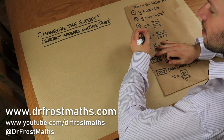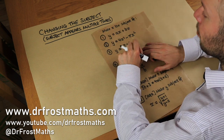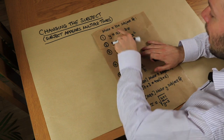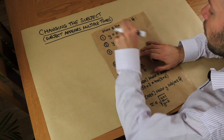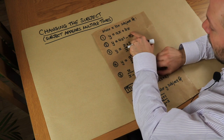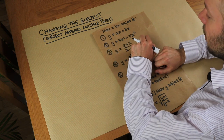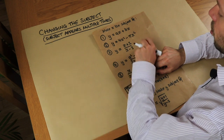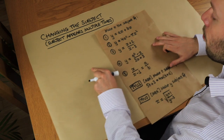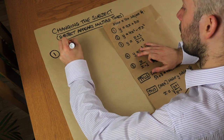Hello and welcome to this video on changing the subject where the subject appears multiple times. If you watched the previous video on changing the subject, we saw that it just means making that variable on its own on one side of the equation only. So if we want to make x the subject, we need to get x on its own on one side of the equation only. The reason this is more challenging is because the subject x appears more than one time. Let me show you the strategy behind questions like this.